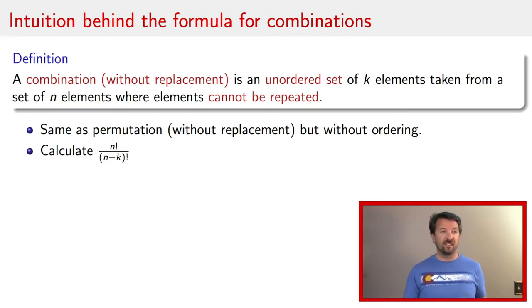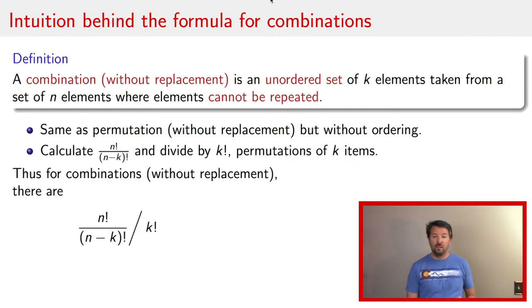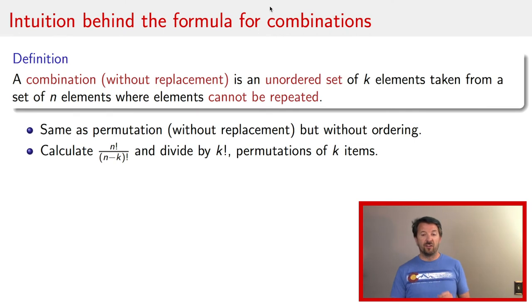And so if you take this formula here, n factorial divided by n minus k factorial, and you divide off the k factorial, you will have the number of combinations. That is, you'll have the number of unordered ways there are to get k elements out of n elements without replacement. So you take n factorial divided by n minus k factorial and divide by that k factorial. That is the number of permutations of those k items.